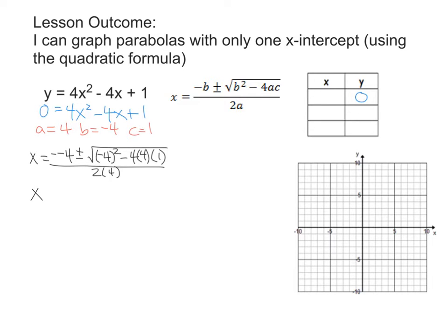So then we get x equals negative negative 4, which is positive 4, plus or minus the square root of negative 4 squared which is 16, minus 4 times 4 times 1 which is 16, all over 2 times 4 which is 8.